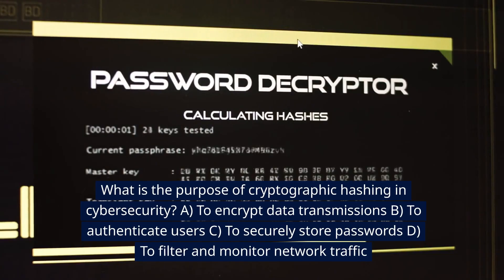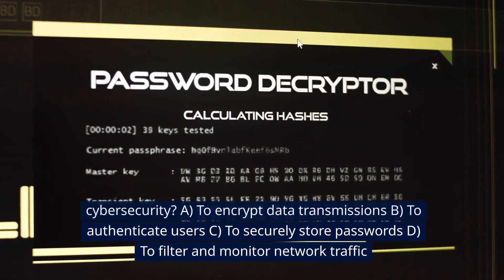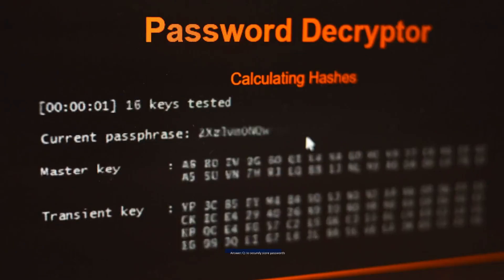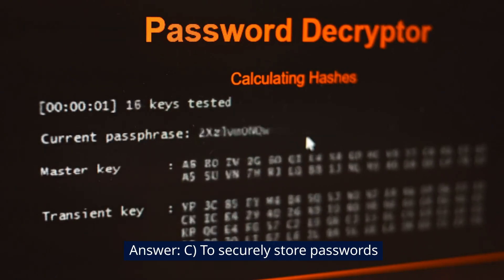What is the purpose of cryptographic hashing in cybersecurity? A. To encrypt data transmissions. B. To authenticate users. C. To securely store passwords. D. To filter and monitor network traffic. Answer: C. To securely store passwords.